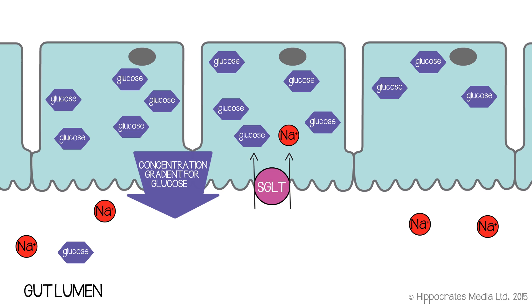But in order to draw the glucose in, you need to put in energy to drive it against its gradient, and that's why we have this secondary active transporter. So the energy released as sodium goes downhill is used to pull glucose uphill. The two processes are coupled.